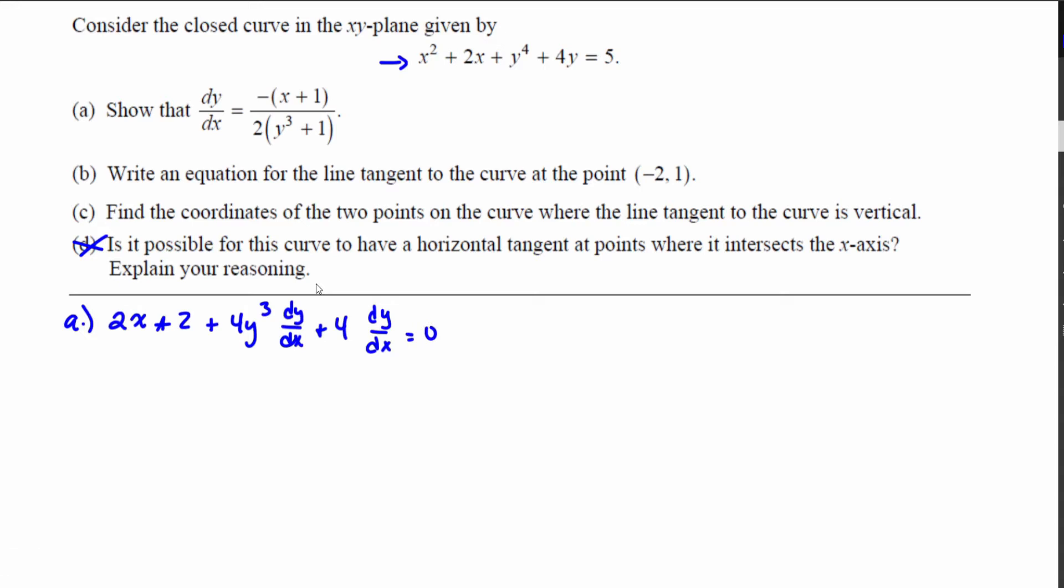I'm going to take those dy/dx's and factor that out. So dy/dx is going to be multiplied by 4y cubed plus 4 and then I'm going to subtract the 2x plus 2, so minus 2x minus 2. Then I'm going to divide out 4y cubed plus 4.